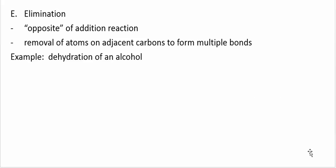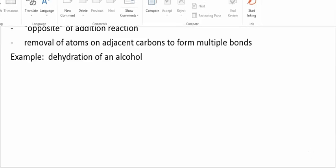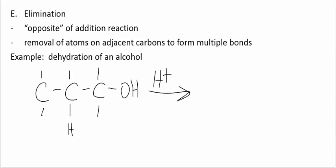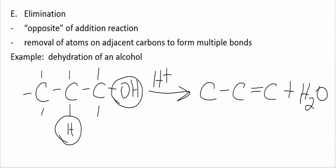The fifth type of reaction is elimination. These are opposite of addition reactions. An example would be the dehydration of an alcohol. So let's say I have this alcohol right here. I add H plus as a catalyst. And all these carbons have hydrogen on them. What's going to happen is water is going to be eliminated in this case, and I'm going to form a double bond by the elimination of the H and OH. So I will get water as another product.